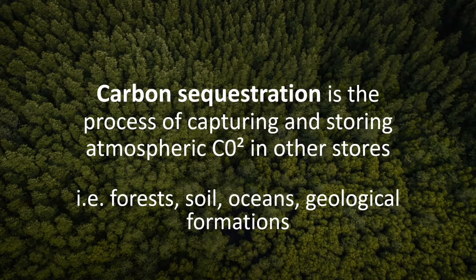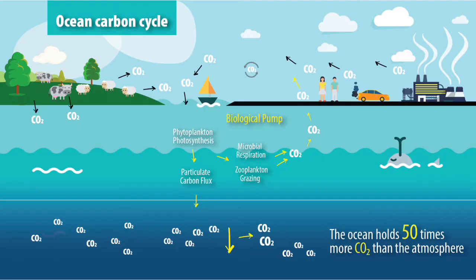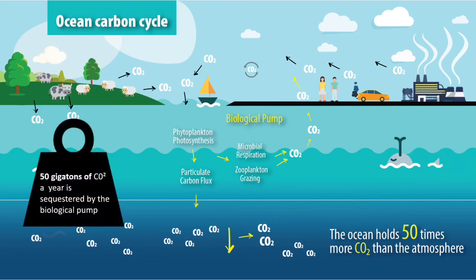Starting with the biological pump — this is really significant. It happens in the oceans. We've covered it slightly in the slow carbon cycle, but it's significant because it sequesters and stores 50 gigatons of carbon dioxide every year, making it a really important area for carbon sequestration.